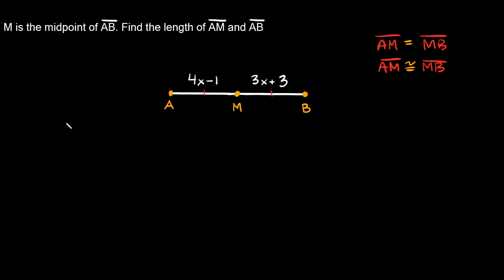Now that we've covered all that, let's go over an example. The problem says M is the midpoint of AB. We need to find the length of segment AM and segment AB. We're given that segment AM equals 4X minus 1, and segment MB equals 3X plus 3.